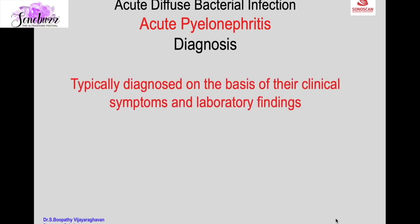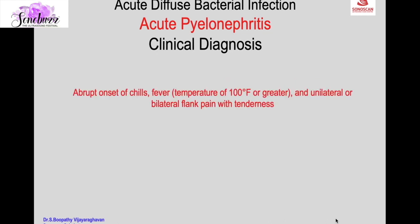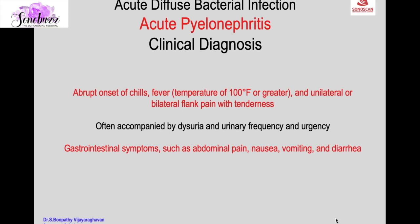Acute pyelonephritis is typically diagnosed on the basis of clinical symptoms and laboratory findings. Radiological imaging is not required for diagnosis and treatment of uncomplicated cases. It is a clinical diagnosis made on abrupt onset of chills, fever of 100 degrees or more, unilateral or bilateral flank pain with tenderness, often accompanied by dysuria, urinary frequency, and urgency. Non-specific gastrointestinal symptoms like abdominal pain, nausea, vomiting, and diarrhea may occur. A positive urine culture confirms the diagnosis.